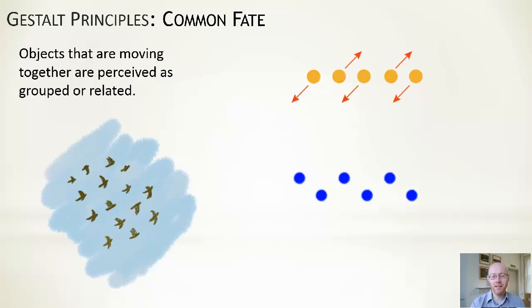Common fate is the last one we want to look at. If we have a bunch of objects and they are moving together, then we generally perceive them as being grouped or related together.